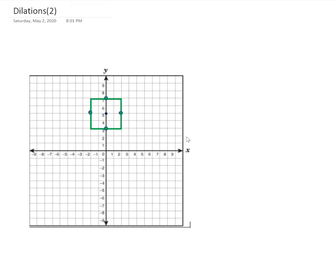Because dilations do not alter the shape of our pre-image, it's possible for us to say that the image we get from a dilation is similar to its pre-image, because it has the same shape.